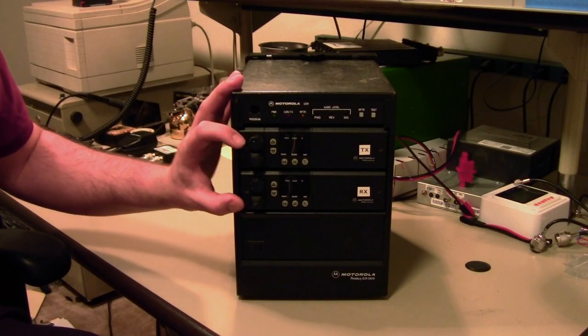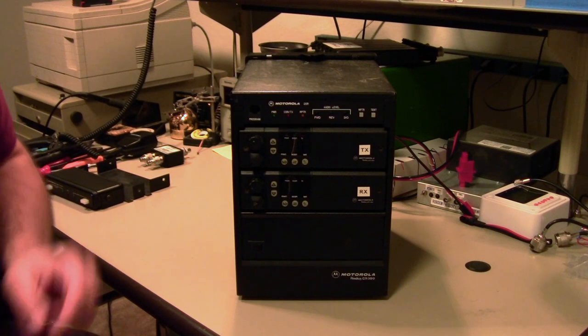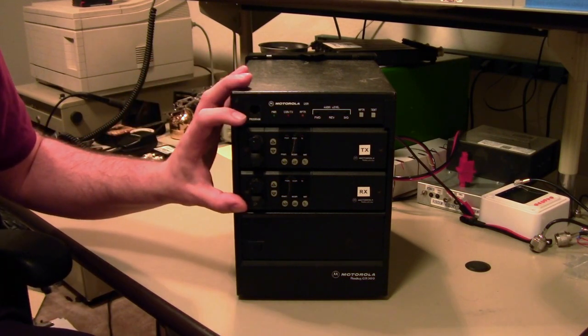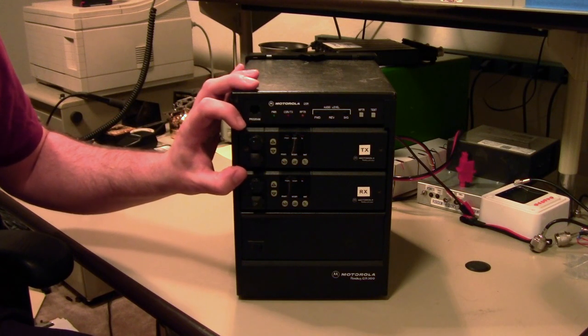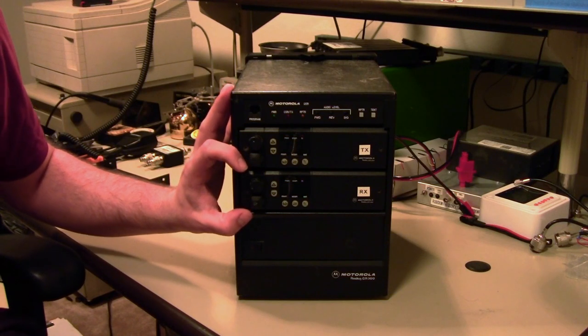Since these are two discrete radios, you're not specifically tied to this being a UHF conventional repeater or a VHF conventional repeater. So I'm actually configuring this as a cross band repeater. So I'm going to have one UHF CDM750 and a VHF CDM750.